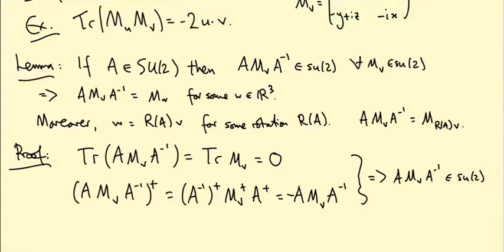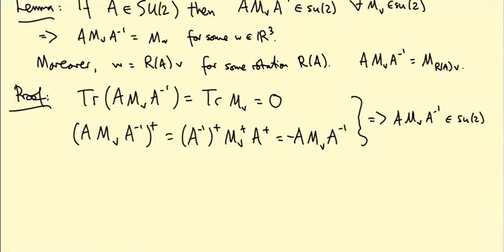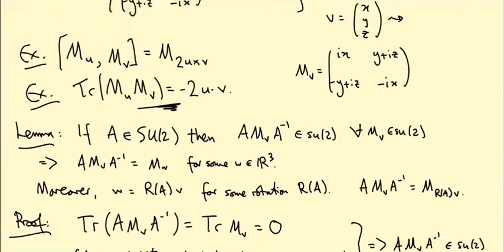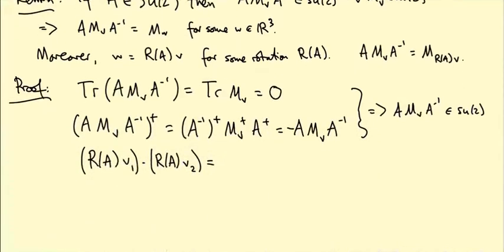To show R_A is an orthogonal transformation, we verify it preserves dot products: R_A(v₁)·R_A(v₂) = v₁·v₂ for all v₁, v₂. Using the trace formula trace(M_u·M_v) = −2(u·v), the dot product R_A(v₁)·R_A(v₂) equals −½ trace(M_{R_A v₁}·M_{R_A v₂}).